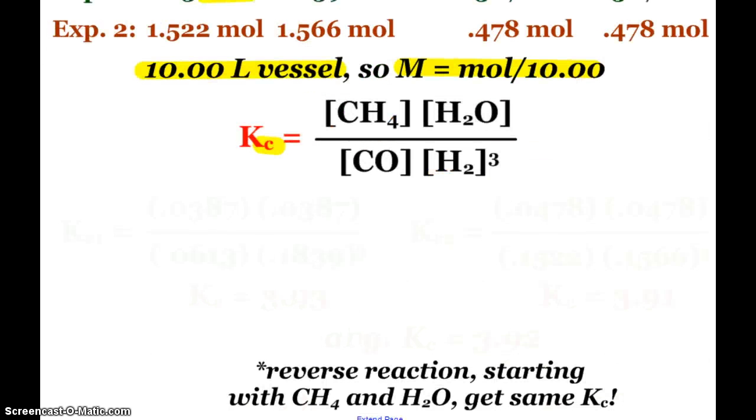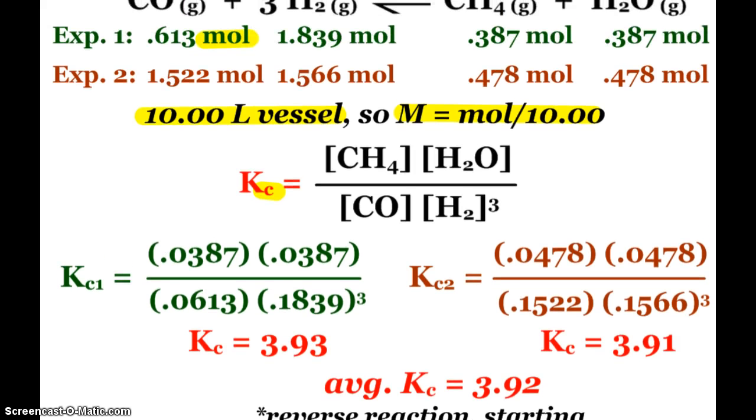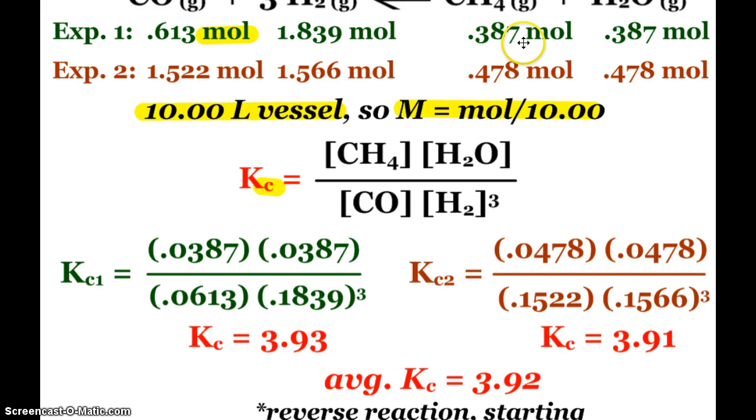So when I plug in that data, this is what I end up with. Okay, so my moles of products, 0.387, become 0.0387 as far as the concentrations are concerned. 0.613 is 0.0613, so on and so forth. But when I plug and chug and calculate, I'll notice that my constants are pretty darn the same. 3.93, 3.91, so I'm going to say my average is 3.92.